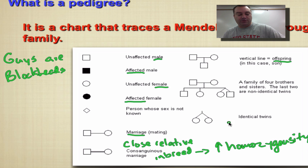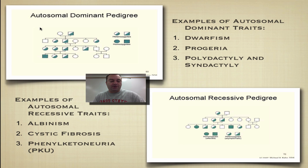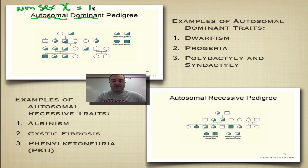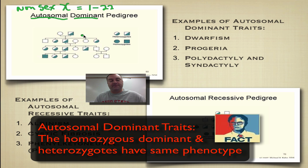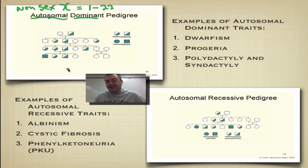Let's look at some actual pedigrees. First, we'll look at an autosomal dominant trait. A dominant trait is always expressed, and autosomal means it's on a non-sex chromosome — one of the first 22 chromosomes, delineated by numbers, not the sex chromosomes X and Y. In an autosomal dominant individual, only one allele is needed to show the trait, so heterozygous individuals will display it. You'll notice the trait shows up quite a bit, and very few individuals are homozygotes because these alleles are typically rare.